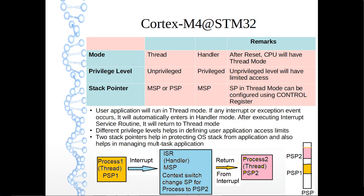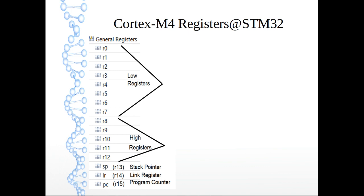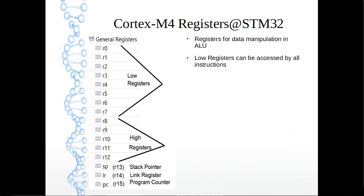Let's look at the registers. We have registers R0 to R12, the stack pointer R13, link register R14, and program counter R15. Registers R0 to R12 are used for data manipulation in the arithmetic logic unit. For the floating point unit we have a separate set of registers. Low registers R0 to R7 can be accessed by all instructions — both 16-bit and 32-bit encoded — while high registers R8 to R12 cannot be accessed by all 16-bit encoded instructions.